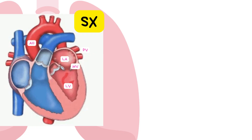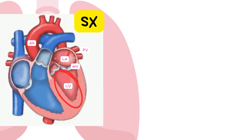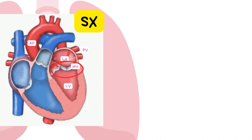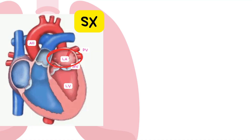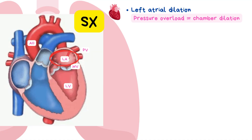Let's walk through the heart and uncover what happens in mitral stenosis. In a healthy heart, blood returns from the lungs, full of oxygen, into the left atrium, then flows freely through the mitral valve into the left ventricle, which pumps it out to the aorta and into the body. But in mitral stenosis, the mitral valve is narrowed. This restricted opening makes it harder for blood to move from the left atrium to the left ventricle during diastole, so the left atrium has to push harder and over time starts to stretch and dilate due to pressure overload.